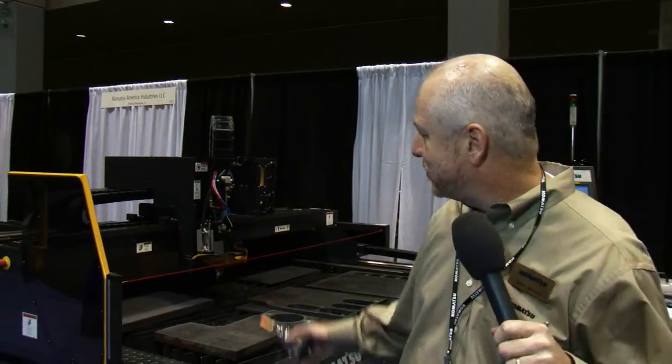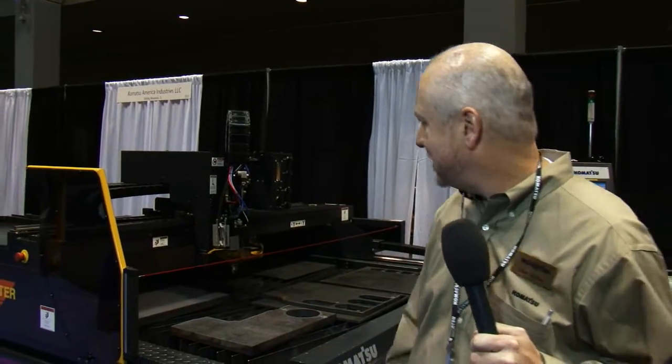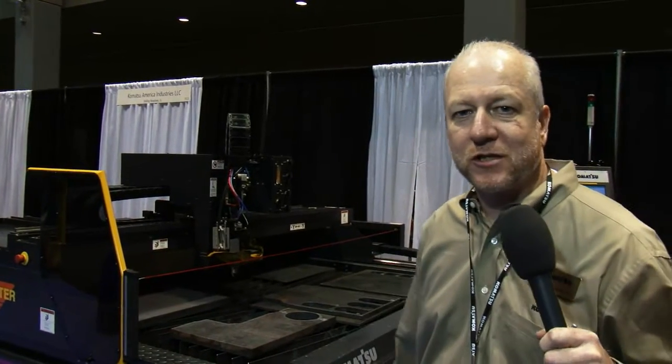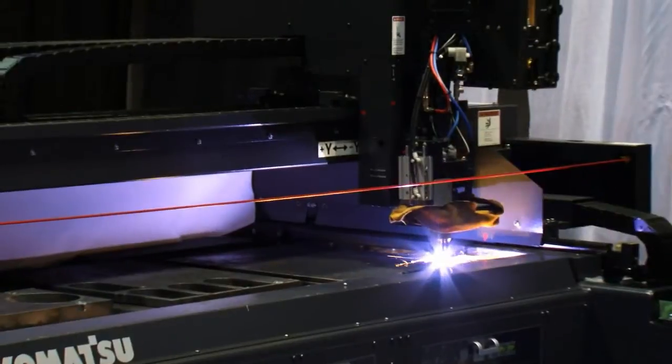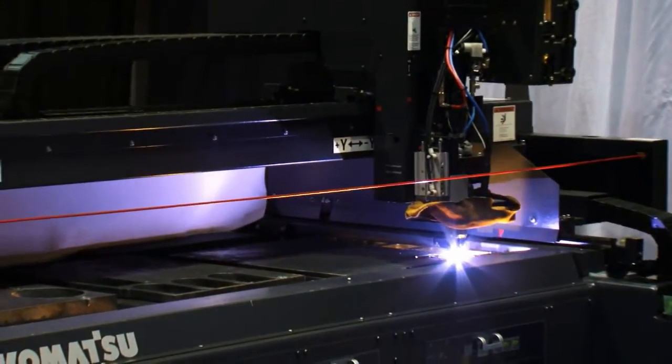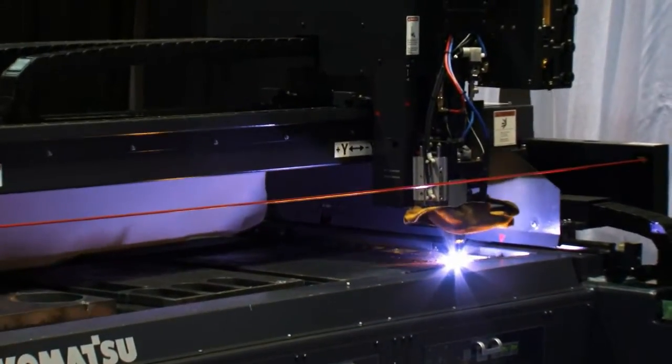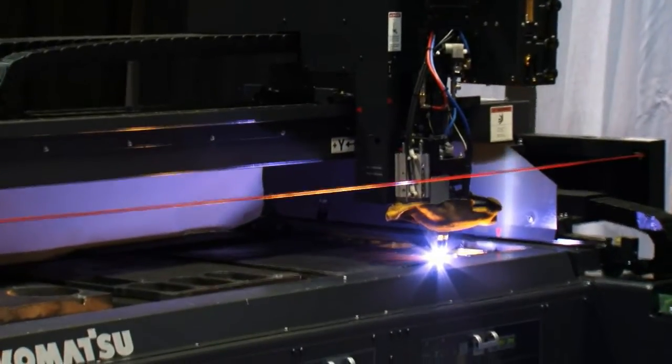Hi, I'm Dave Harvey. I'm the service manager for Komatsu America Industries. We're here at Fabtech 2013. We're displaying our Twister TFP3062. This new technology that we're displaying is a combination precision torch and oxy-fuel cutting torch. This machine is capable of cutting 16 gauge up to 2 inch material with just one torch.